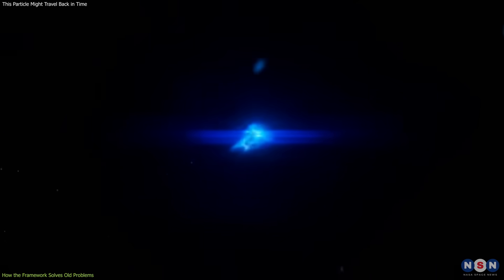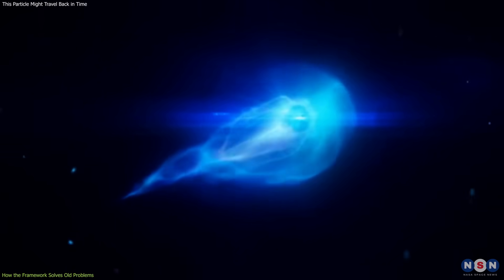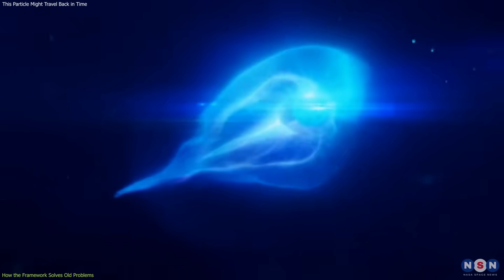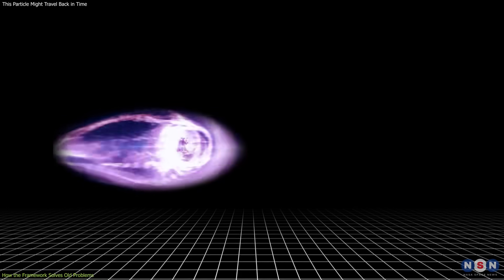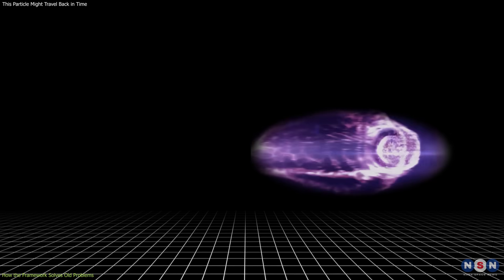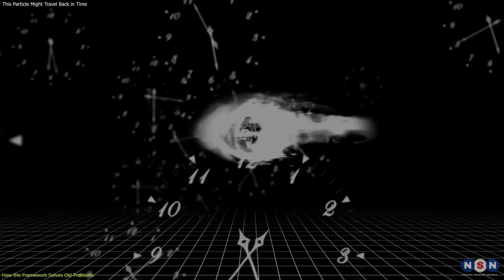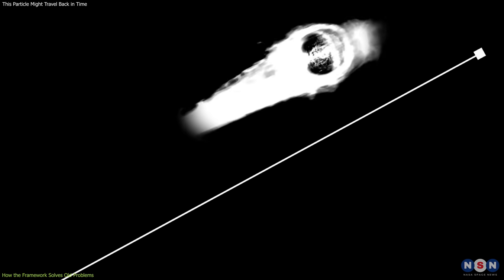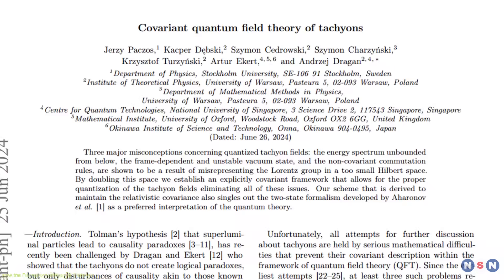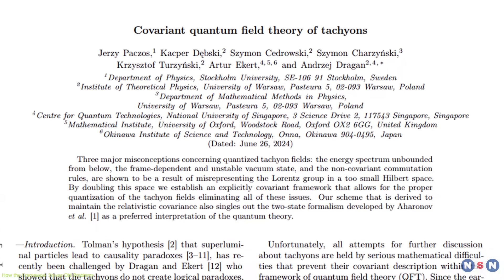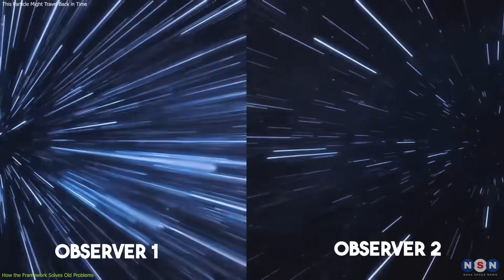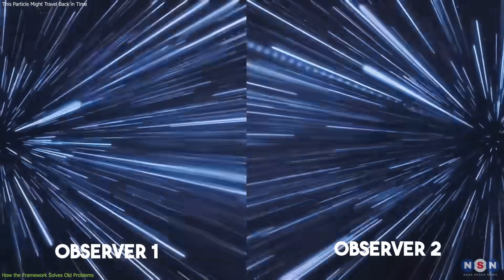In this view, the world line of a tachyon, a path it traces through space and time, is determined by both emission and absorption events. It's not that the particle travels into the past, rather, it completes a path between two fixed boundaries. This interpretation avoids one of the oldest objections, that tachyons imply violations of causality.